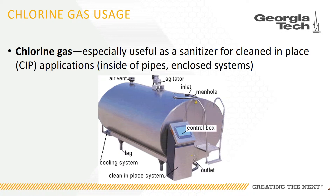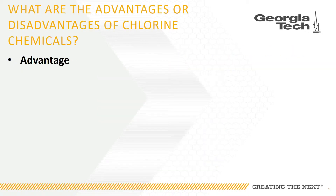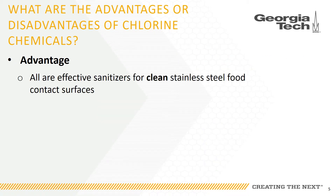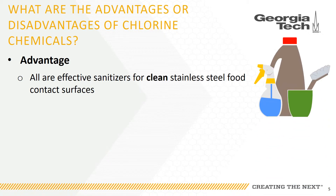Chlorine gas is a toxic gas with a yellow-green color of vapor. One advantage of chlorine chemicals is that all of them are effective sanitizers for clean surfaces, especially stainless steel food contact surfaces. They are inactivated by contact with organic material, however, such as food or blood, so a cleaning step is often required for heavily soiled surfaces before disinfection can occur.